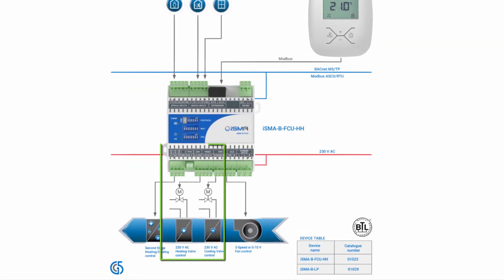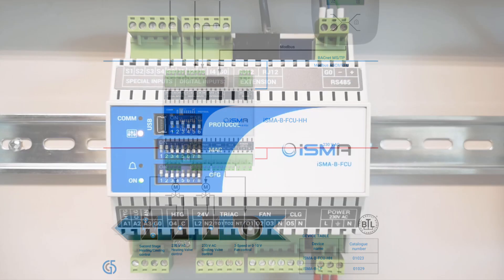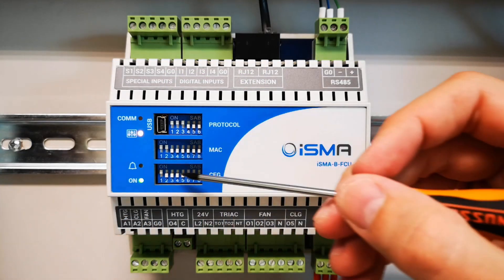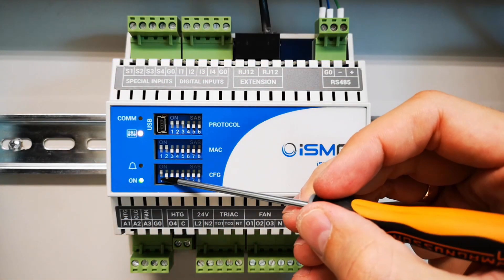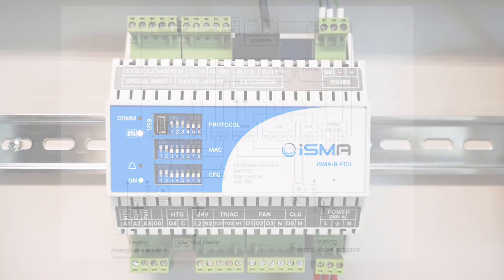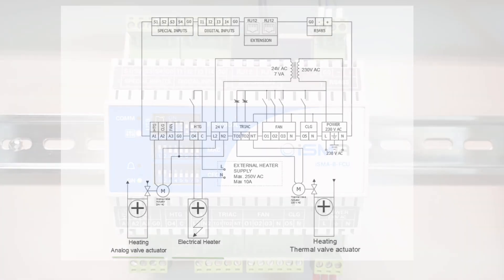In case of 4-pipe, both hot and chilled water are available to the FCU. The second configuring DIP switch selects if our fan coil unit controller will work with a single heating device (first stage only) or with two heating devices — a basic first stage and an additional second stage.